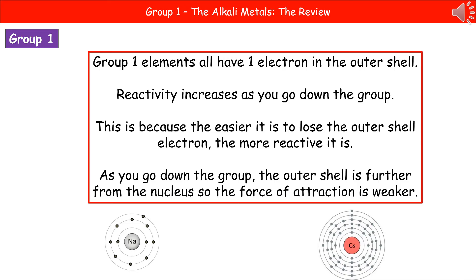The last thing to consider is how we explain the trend in reactivity. Group 1 elements all react in a similar way because they've all got one electron in their outer shell. The reactivity increases as you go down the group because further down there are more shells with electrons, meaning that outer shell electron — the one that's going to be lost — is further from the nucleus. So the force of attraction holding that electron in place is weaker. The further down the group, the weaker the force of attraction, so the electron is lost more easily, making it more reactive.